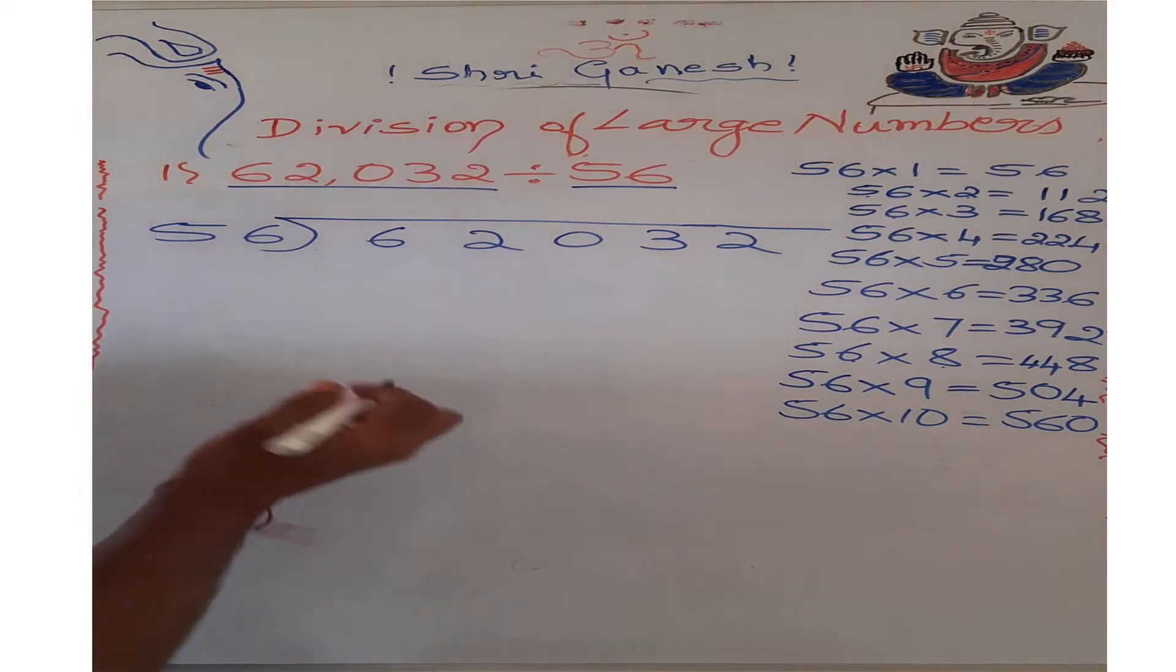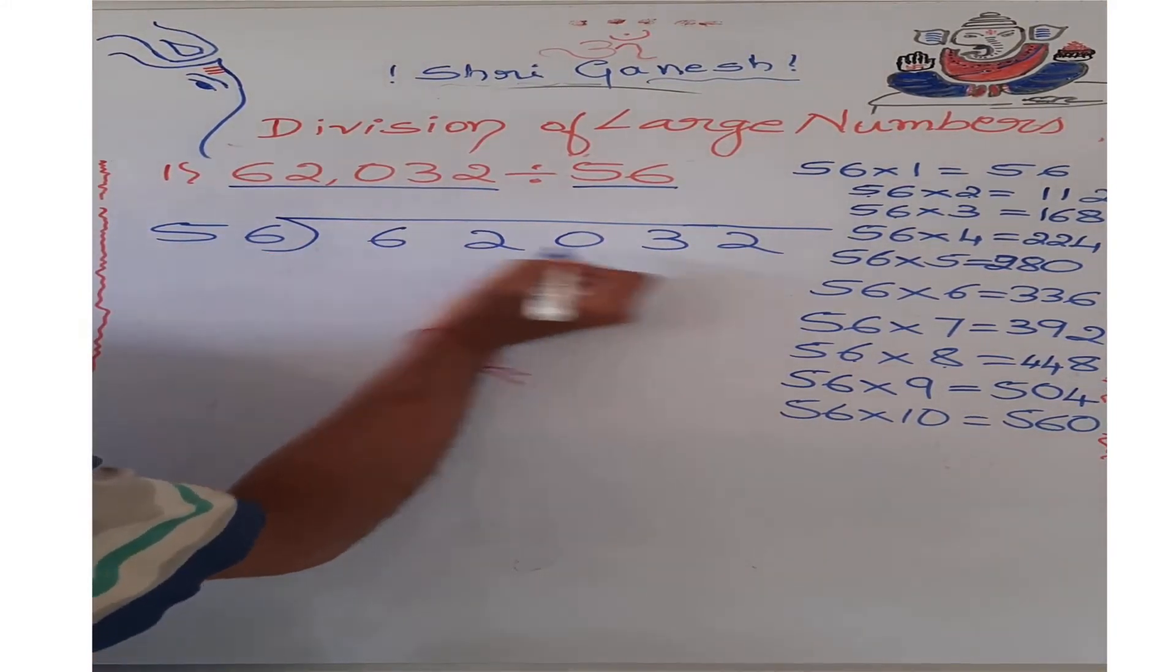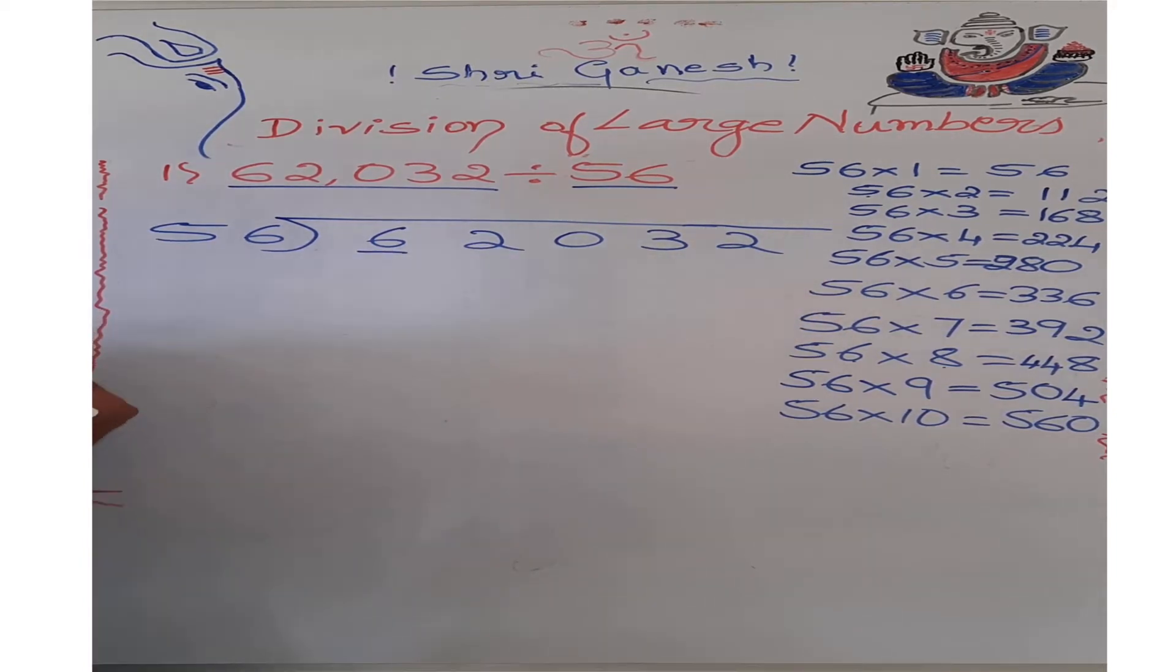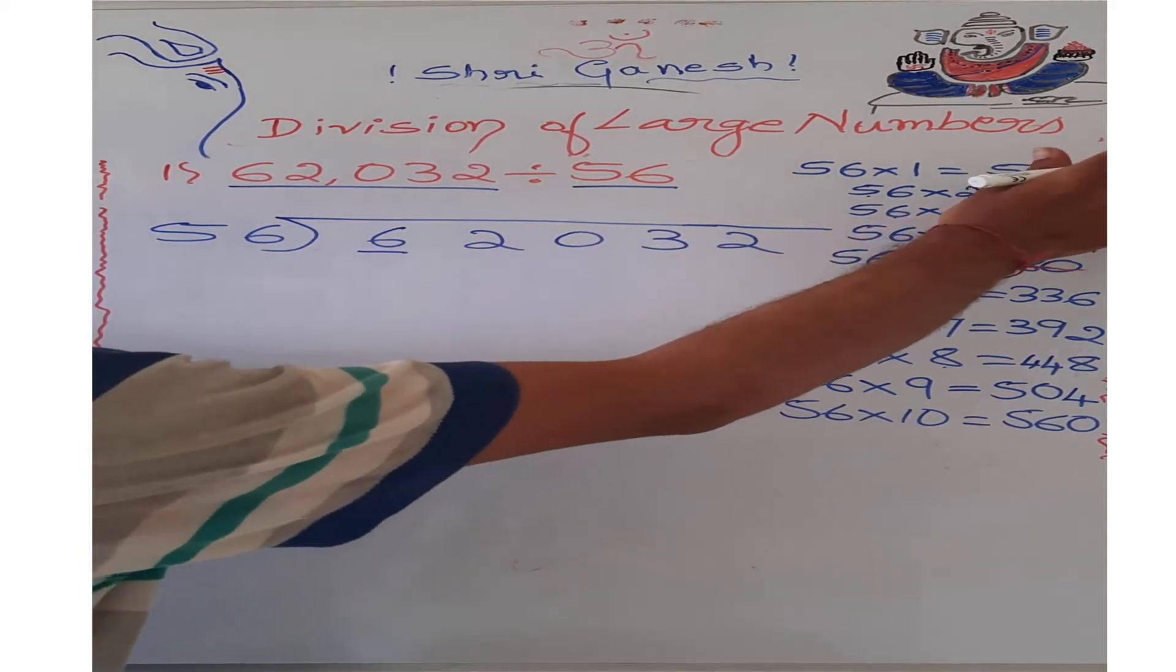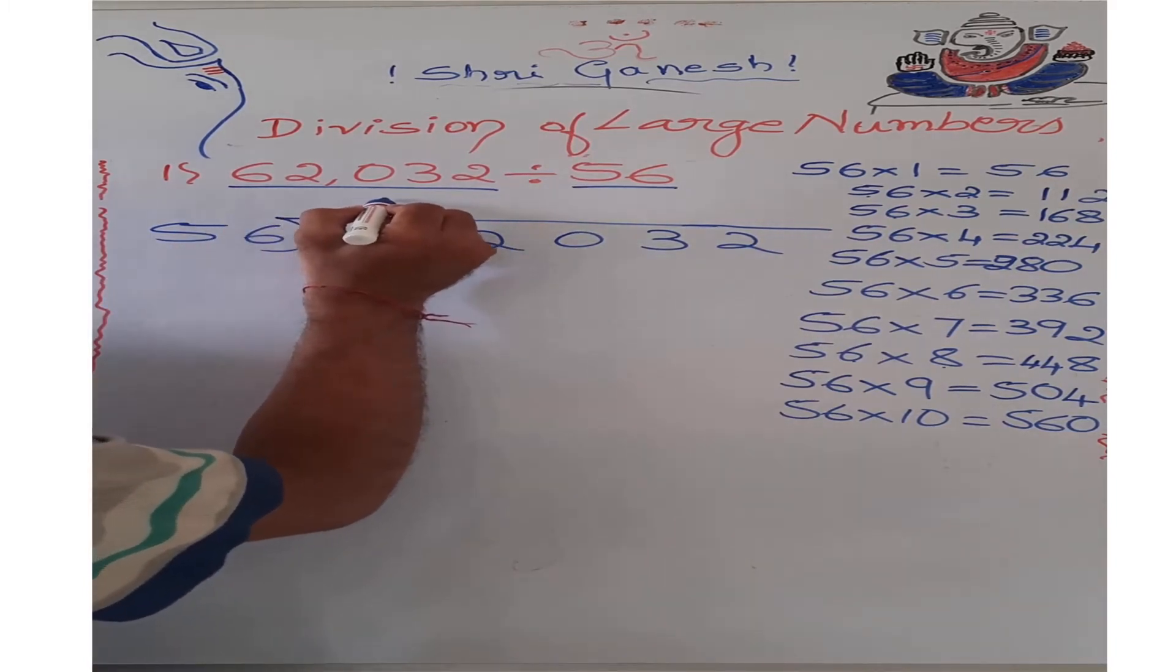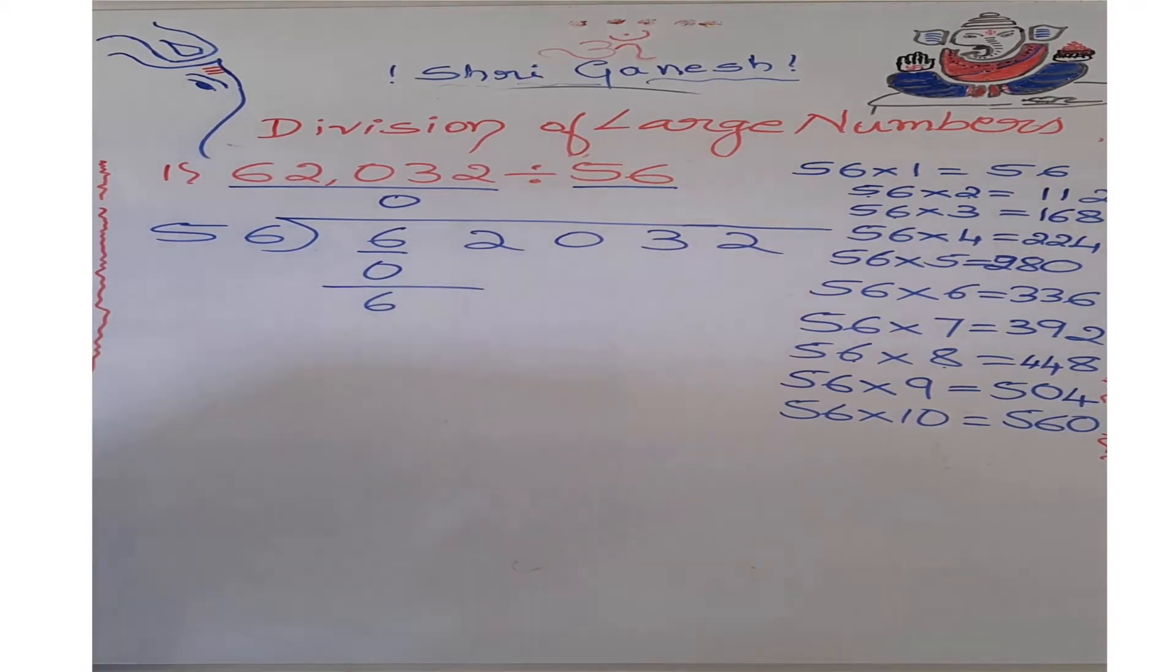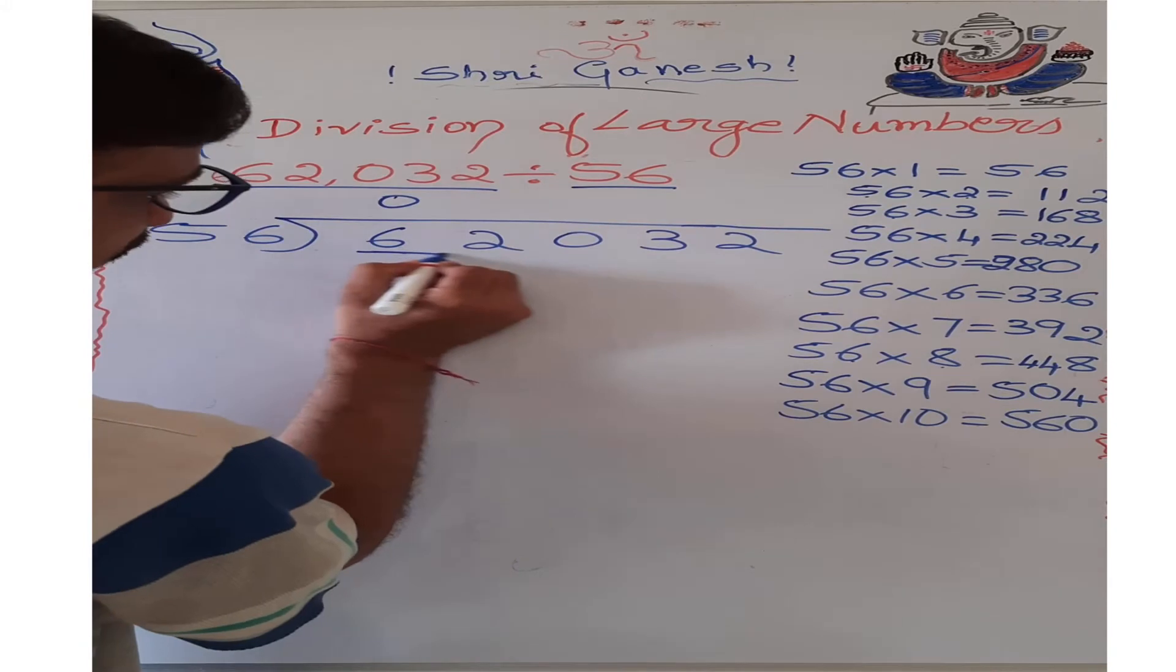Now we will start dividing this number, starting from highest place to lowest place. In the highest place we have 6. The first multiple we got is 56 which is greater than that, so we need to take 0. If we take 0 we get a remainder as 6. Because of that, this 0 doesn't have value, so I will skip this step. Here I will take 2 digits at a time.